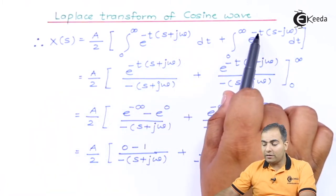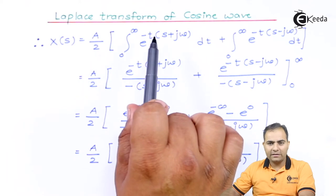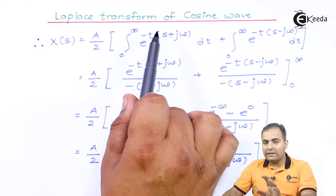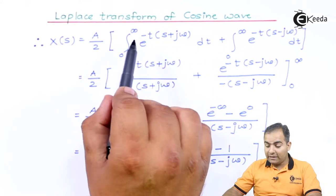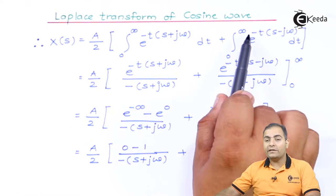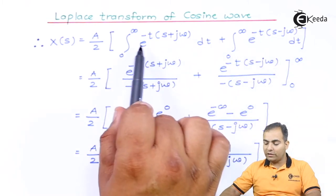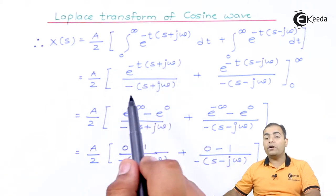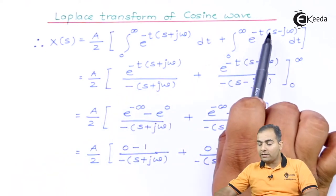Taking minus t common gives (s + jω) in the first bracket. From previous videos, integrating an exponential term leaves the exponential as-is, with its coefficient of the variable placed in the denominator. The coefficient in the first integral is −(s + jω) and in the second is −(s − jω). After integrating both sides, we get e^(−t(s+jω)) / (−(s+jω)) and e^(−t(s−jω)) / (−(s−jω)).